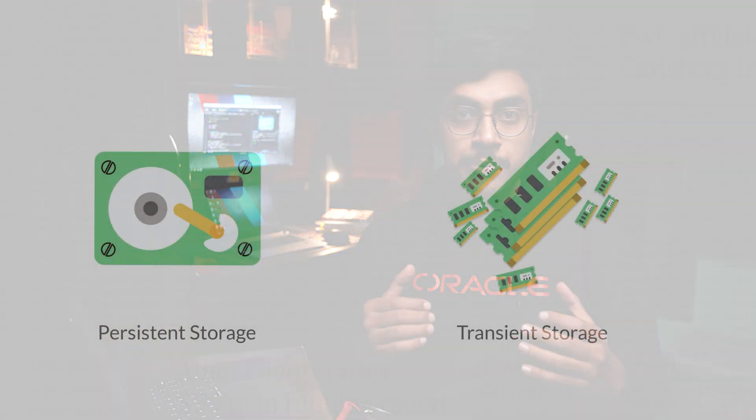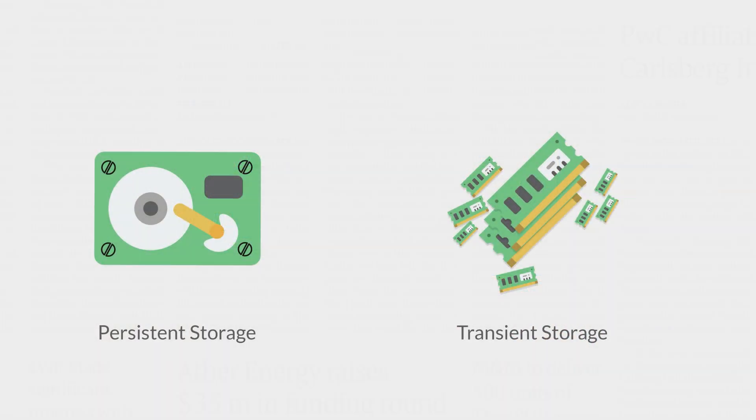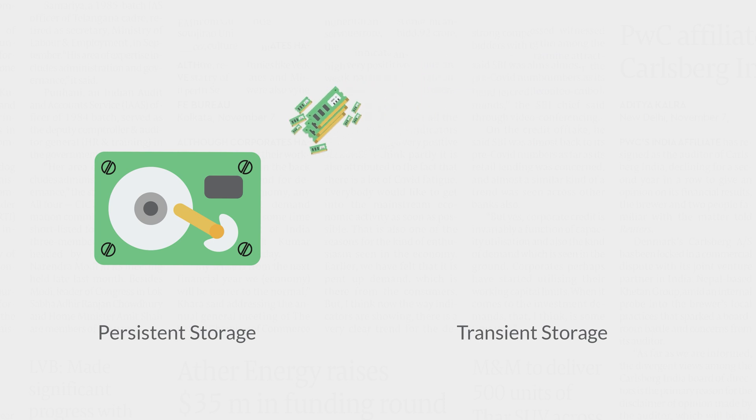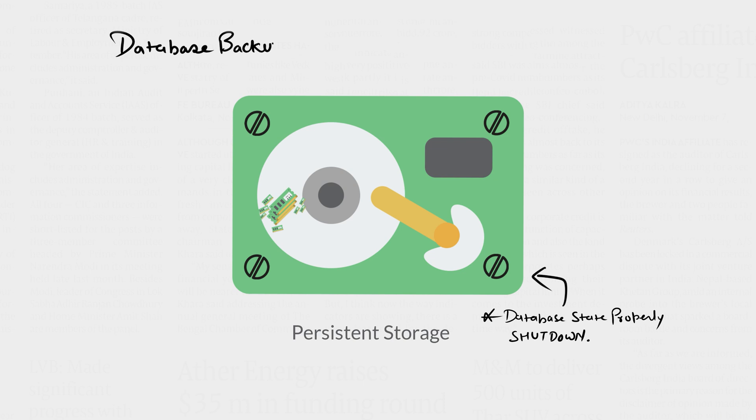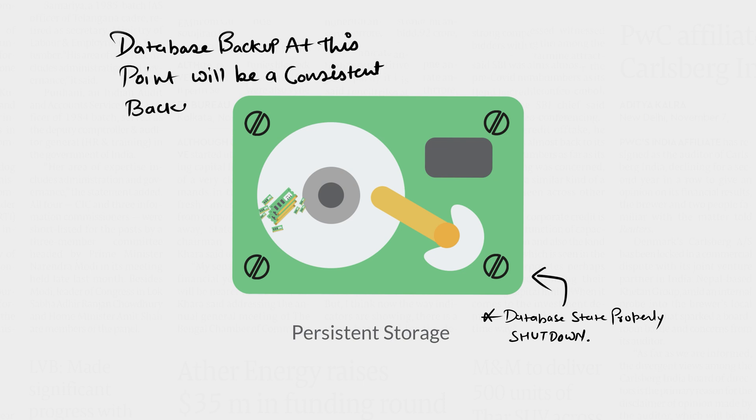When the database is shut down properly using the shutdown, shutdown transactional, and shutdown immediate commands, it updates the persistent storage with all the information from transient storage, making them both consistent with each other. When you shut down the database like so and then take the backup, it is called a consistent backup. In simplified terms, backup taken when the Oracle database is shut down is called a consistent backup, simply because no new information is being added or removed — it is static, hence the backup is consistent.